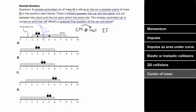To find the correct solution, we need to find which option also has the center of mass at 4. Option A puts the center of mass at 3 — can't be right. Option B puts it between 3 and 4 — can't be right. Option C puts it at 5 — can't be right. Option D has the car at 5 and the plank's center at 3, which puts the center of mass at location 4, just like before. So D is the correct answer.